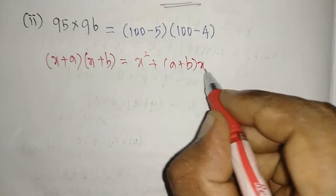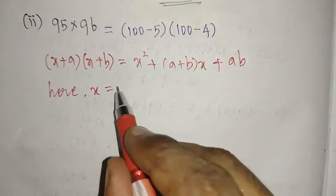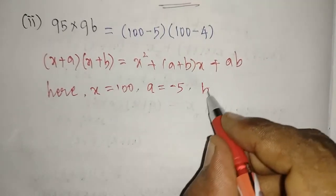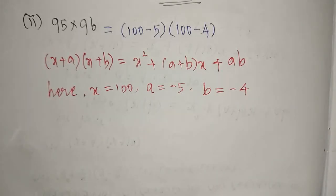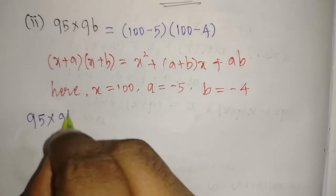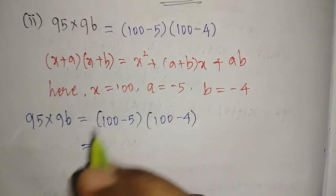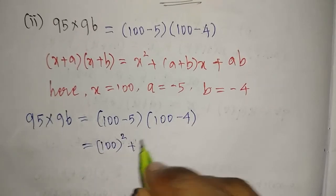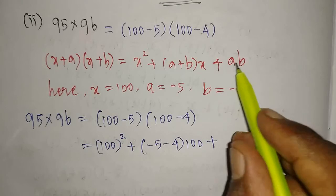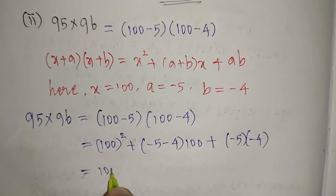Here the value of x is 100, the value of a is minus 5, and the value of b is minus 4. Now start to substitute these values. Using the formula: x squared means 100 squared, plus a plus b — a value is minus 5, b value is minus 4 — into x which is 100, plus a into b means minus 5 into minus 4.